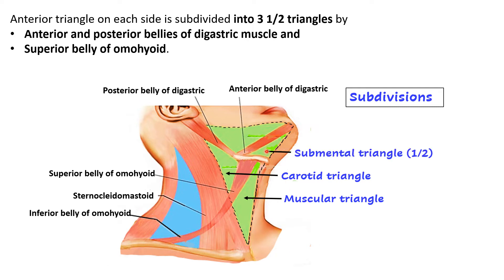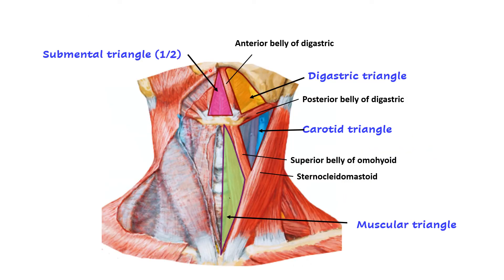The submental triangle occupies the median region, so only half is present on each side. Its sides are formed by the anterior bellies of the digastric, the base is the hyoid bone, and the apex is the symphysis menti. The digastric triangle, as the name suggests, has two sides formed by the digastric muscle — the anterior belly and the posterior belly — and its superior boundary is formed by the base of the mandible and the line extending from the angle of the mandible to the mastoid process.